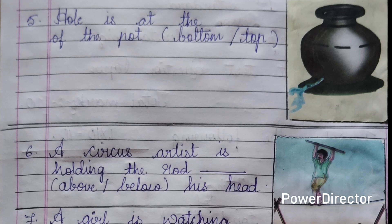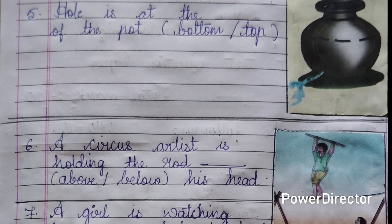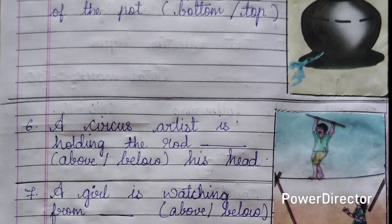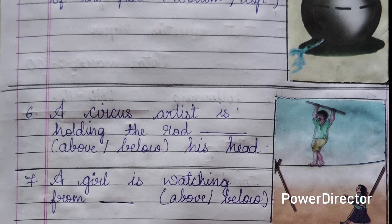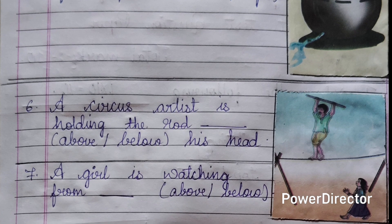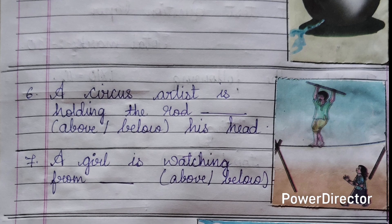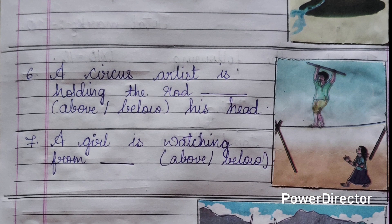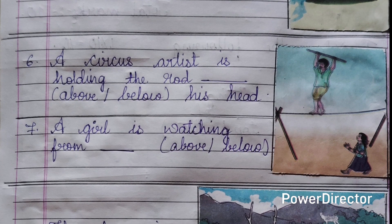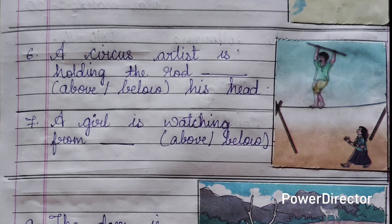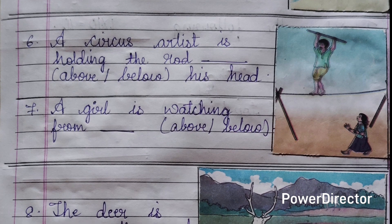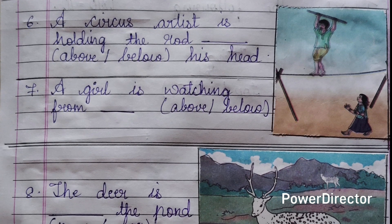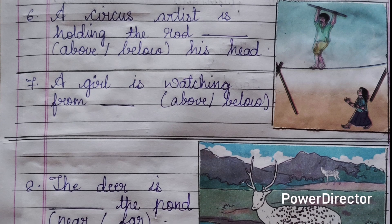Number five: the hole is at the dash of the pot. Options are bottom or top. If you see the picture, the hole is at the bottom of the pot, so the answer is bottom. Number six: a circus artist is holding the rod dash his head — above or below. The answer is above. Number seven: a girl is watching from dash — above or below. The answer is below.